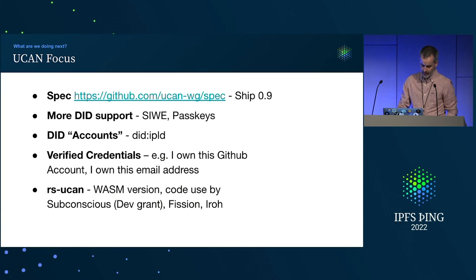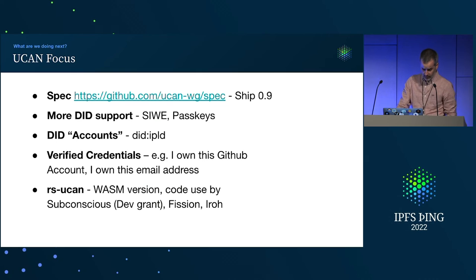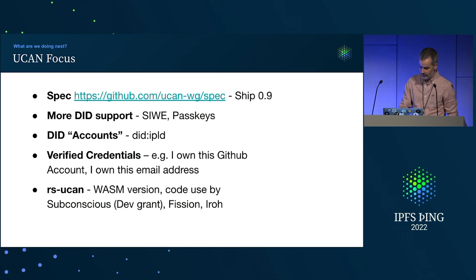Another thing is a WASM version, based on the Rust implementation of UCANs, that can be used by Subconscious and Iroh.